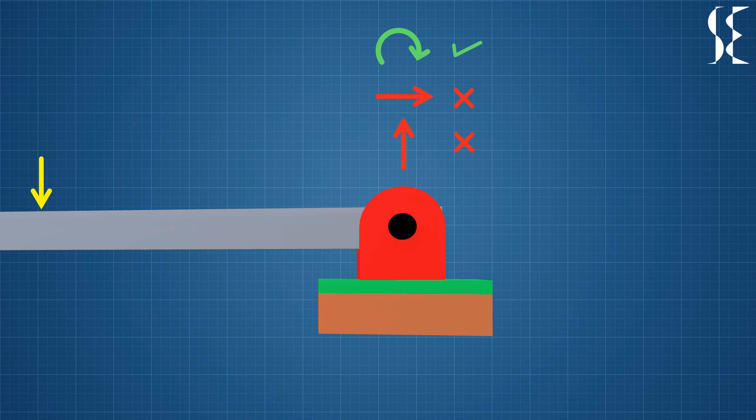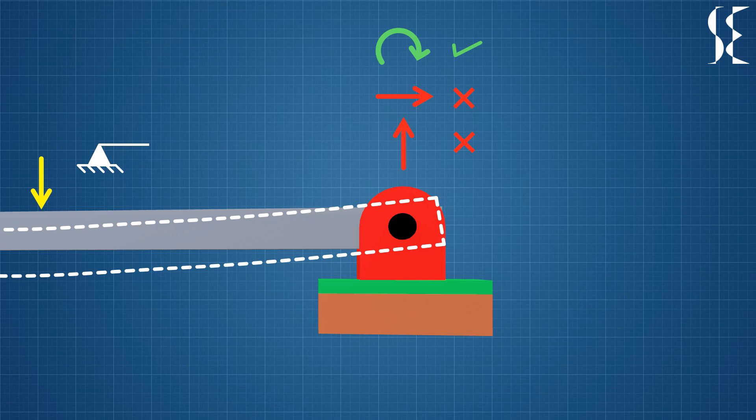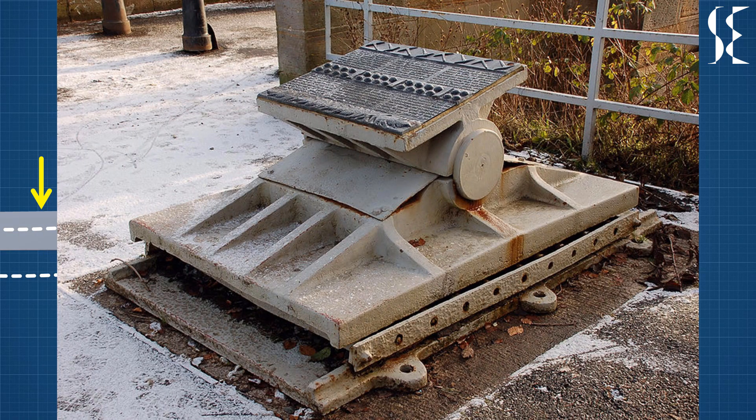Hence, it produces two reactions to the applied force. One in horizontal direction and other in vertical direction. Value of the bending moment will be zero at pin support as it allows rotation. Pin support is generally represented in mechanics in this way. This kind of support is also found in bridges and trusses.